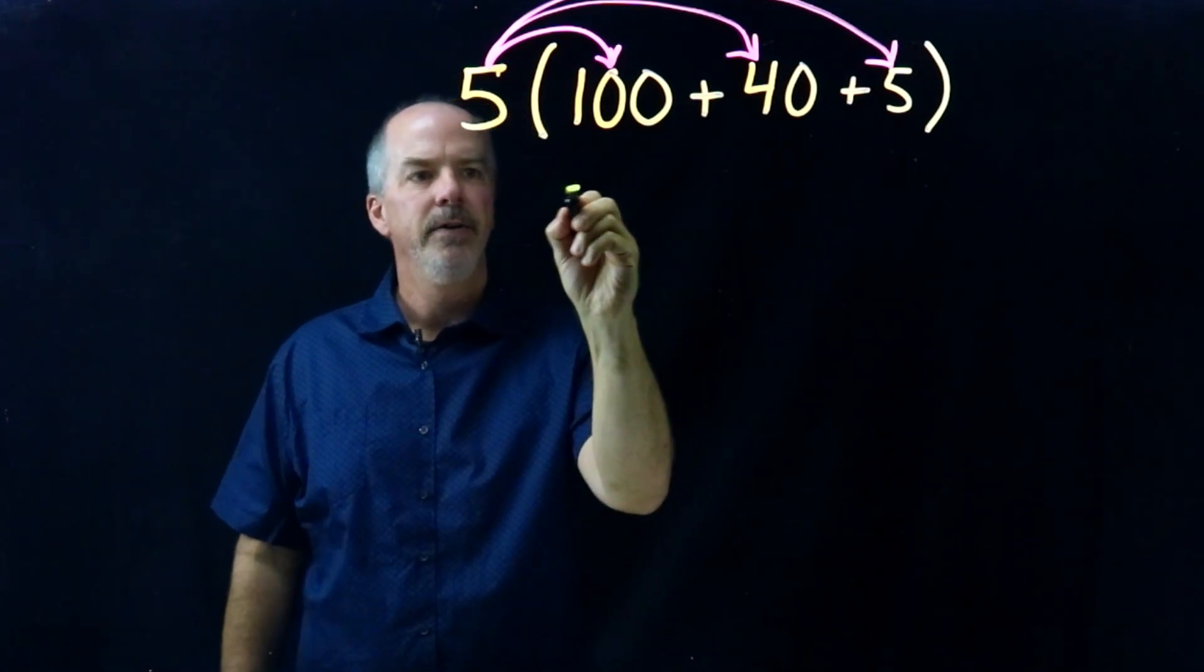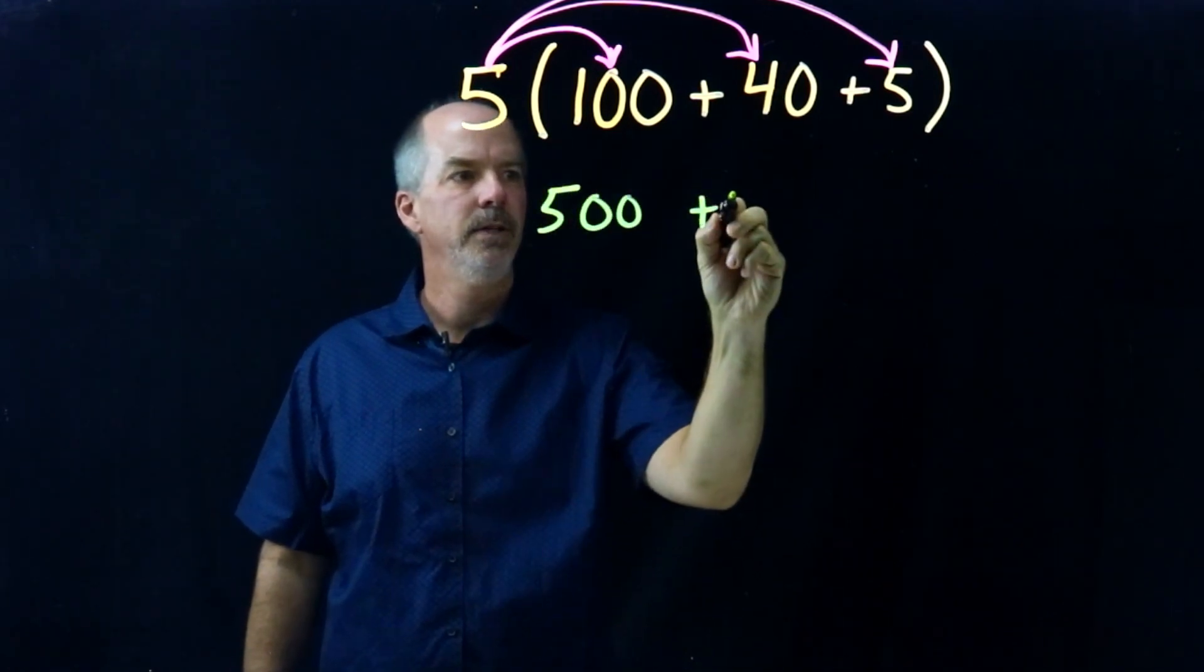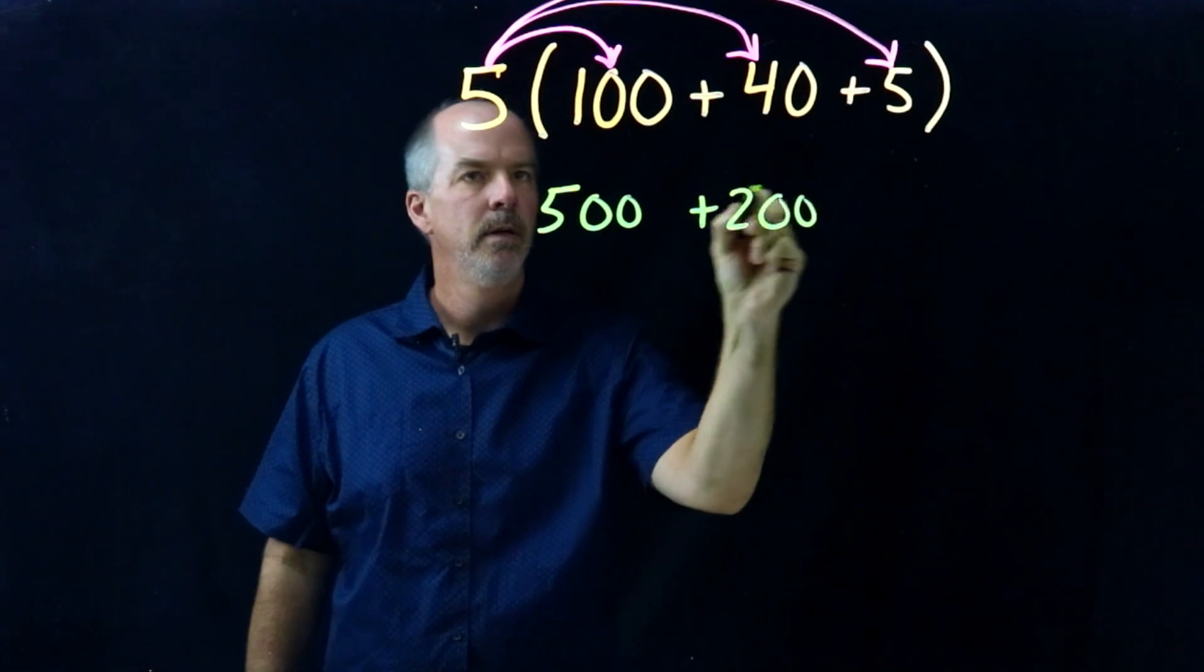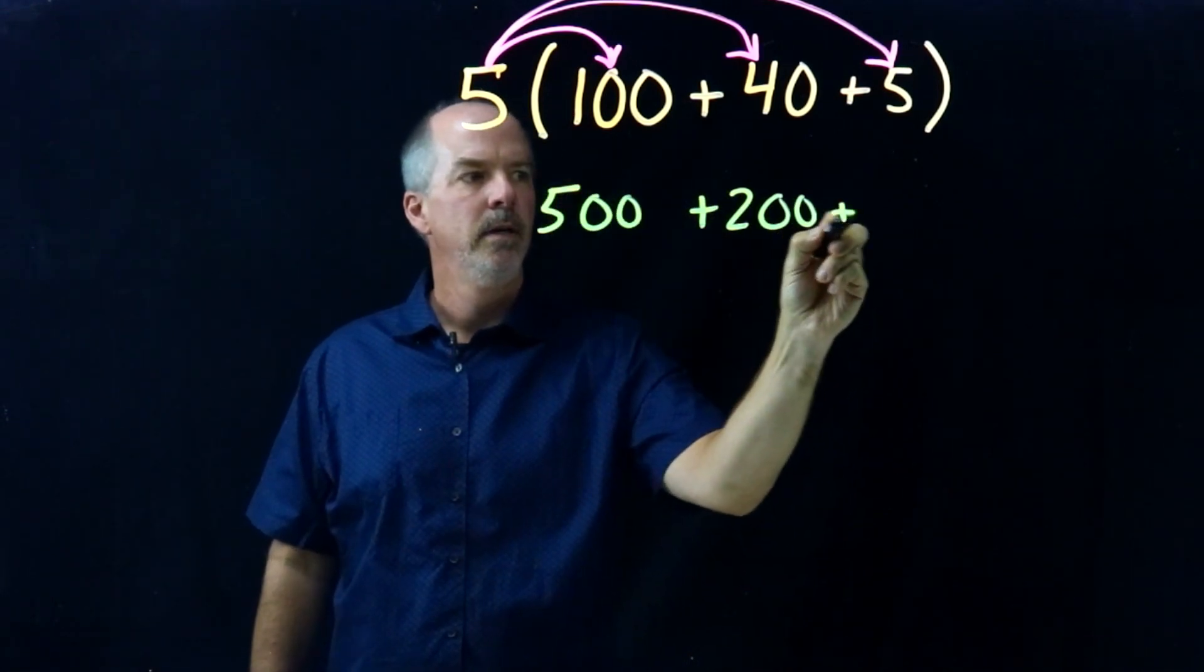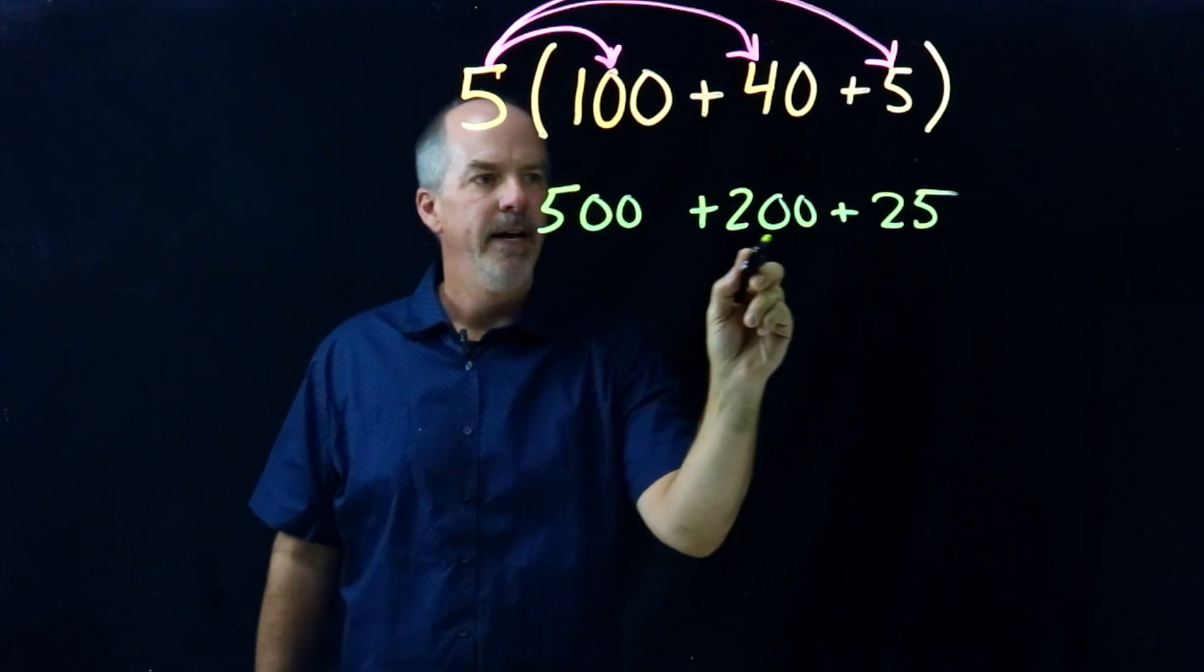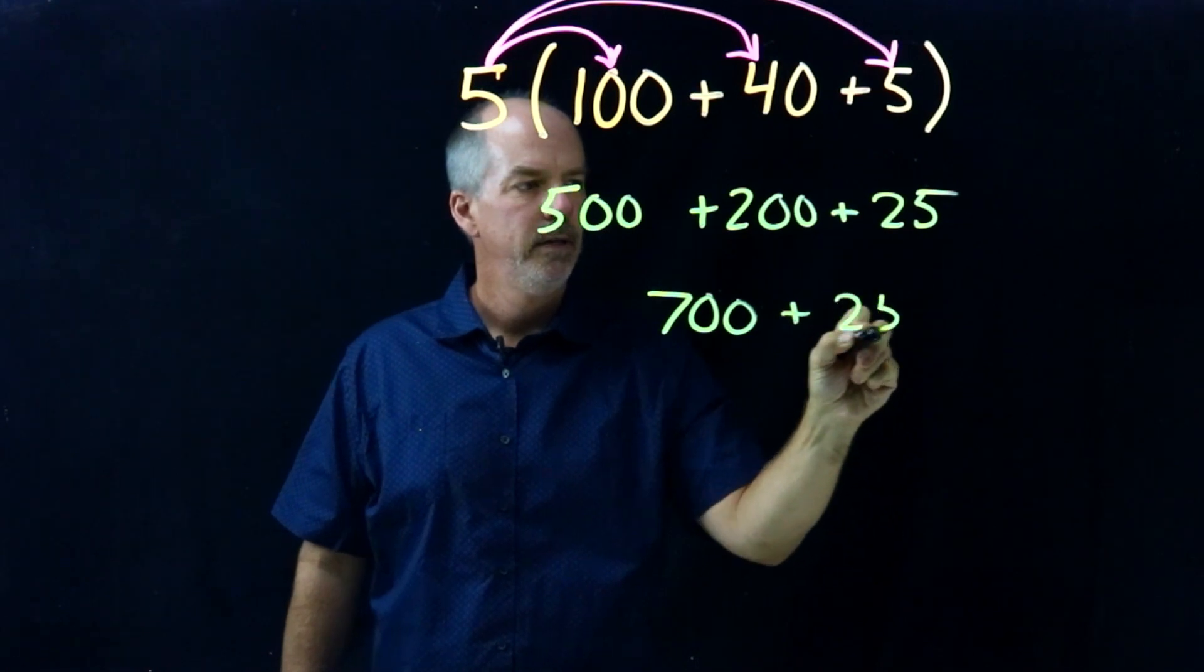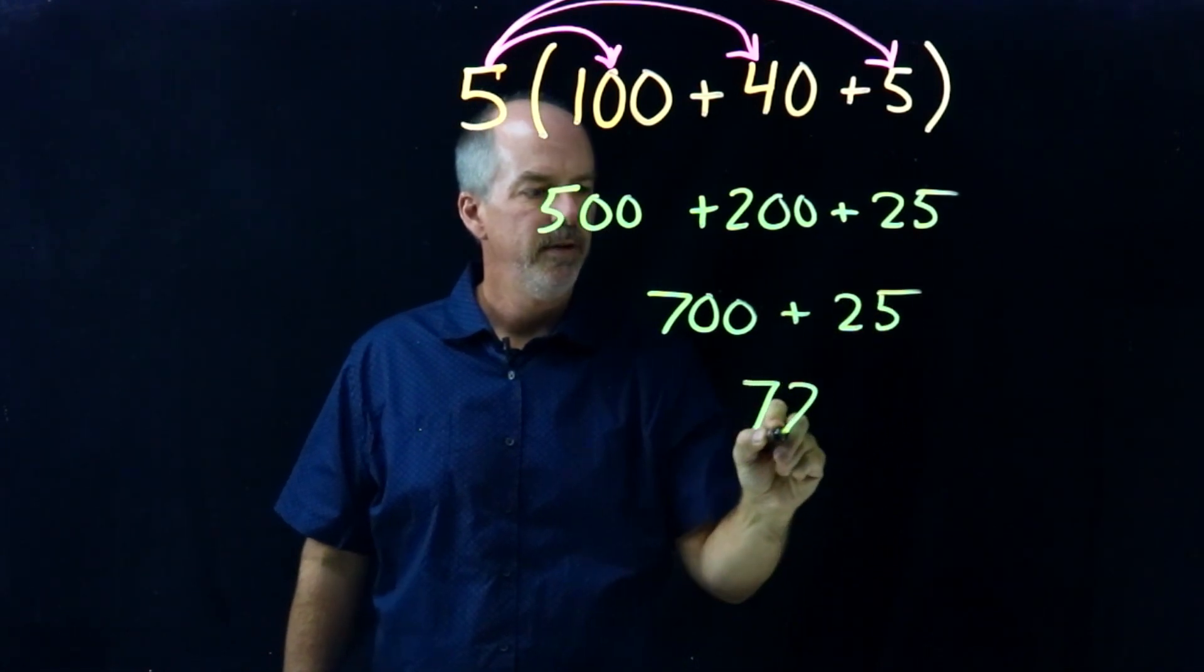So five times one hundred is five hundred, plus five times forty is two hundred, plus five times five is twenty-five. Five hundred plus two hundred is seven hundred, plus twenty-five is seven hundred twenty-five.